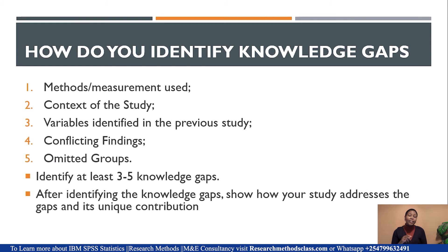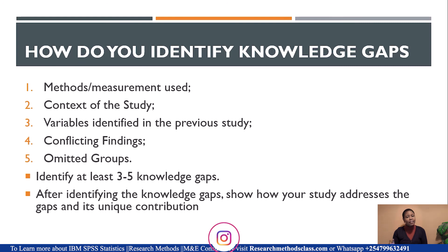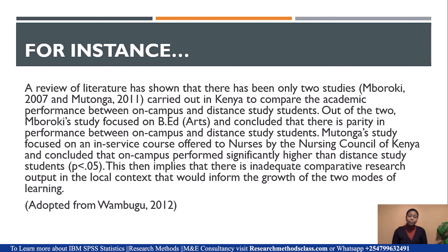Please do not force the author of the work you are referring to do your study. Some students mention that the author did not look at the influence of X on Y — yet that is exactly the study you want to do. Identifying the knowledge gap is about looking at their studies vis-à-vis the methods you are using, your context, your variables, their findings, and identifying the gap. After identifying the knowledge gap, show how your study addresses those gaps and how it will make a unique contribution.